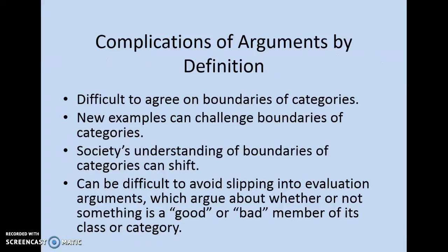This can be difficult because sometimes we don't agree on the boundaries of categories. Sometimes that's because of disagreement about old examples, but sometimes new examples challenge the boundaries of categories. Some people will want the boundaries to expand while others want them to stay the same. Sometimes society's understanding of boundaries shifts, but people will resist that — some say they shouldn't shift, others say they should.